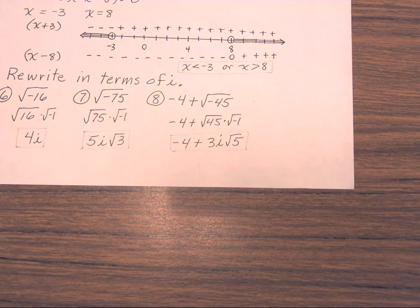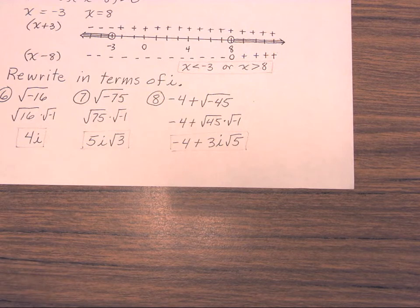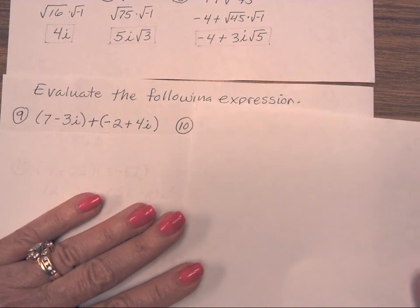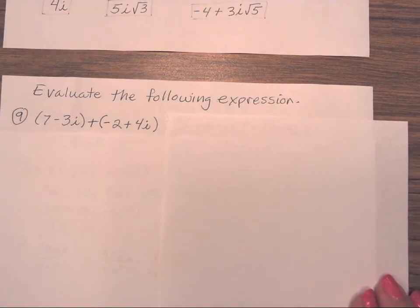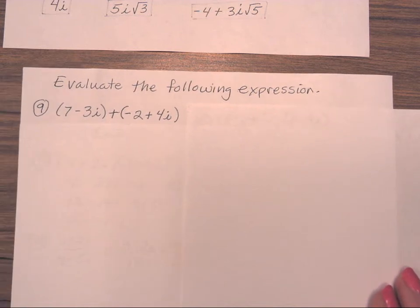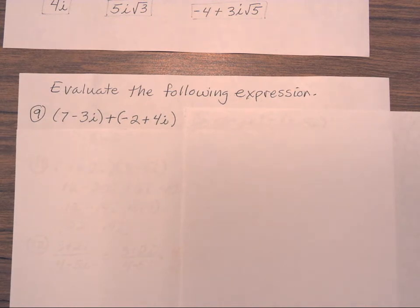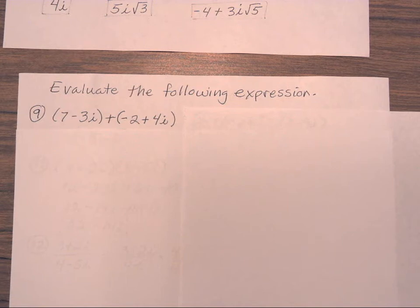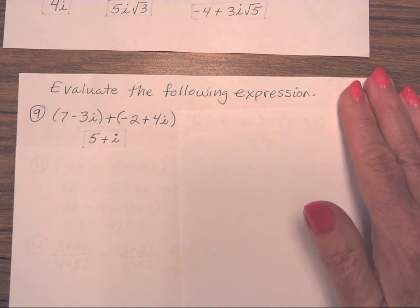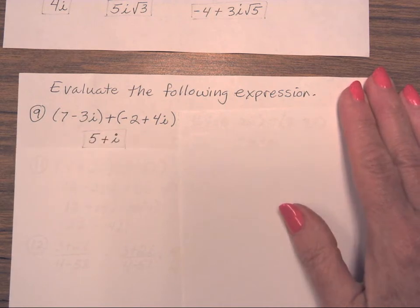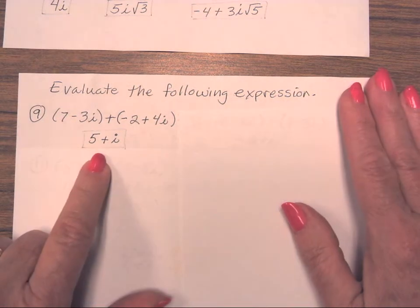The next thing we did with complex numbers was work with operations — we started with add and subtract. For number 9, I have my first complex number 7 minus 3i, plus my second complex number negative 2 plus 4i. When you add and subtract, you combine the real parts together, then you combine the imaginary parts together. 7 plus negative 2 is 5. Negative 3i plus positive 4i is positive 1i. The final answer is 5 plus i.